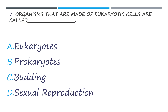Number 7. An organism that is made of eukaryotic cells is called blank. A. Eukaryotes. B. Prokaryotes. C. Budding. And letter D. Sexual reproduction.